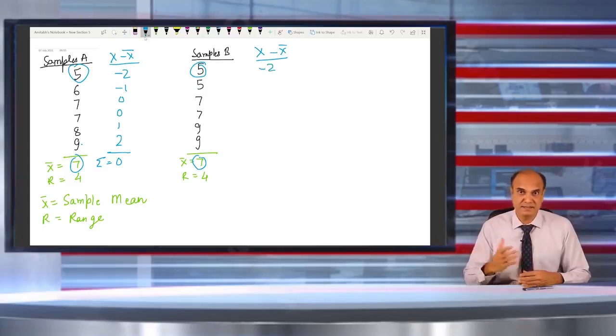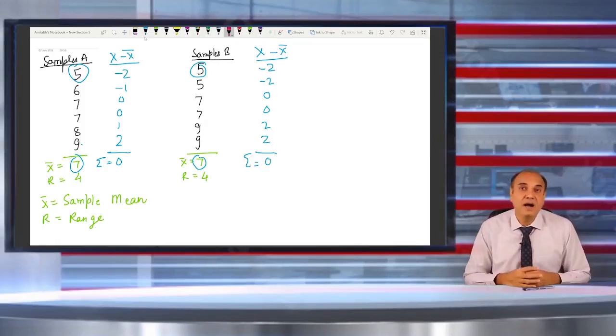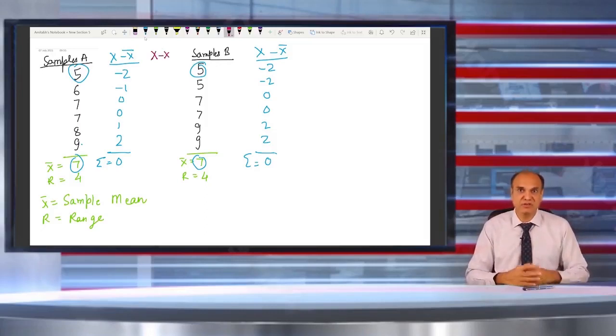So if I take the sum total of all the distances, then it just totals up to 0. So I failed to achieve my objective of finding the variation. So what I would do is I will square the distances to remove the minus sign, and maybe that might work.